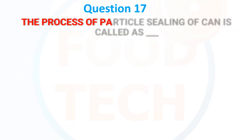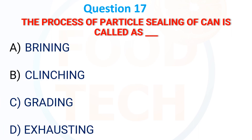The process of hermetic sealing of a can is called: A) Brilling, B) Clinching, C) Grinding, D) Exhausting. The answer is B) Clinching.